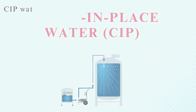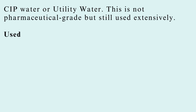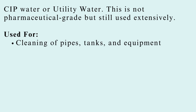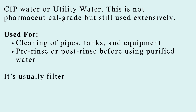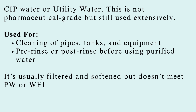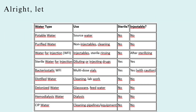Clean-in-place water, or CIP water — also called utility water — is not pharmaceutical grade but still used extensively. It's used for cleaning of pipes, tanks, and equipment, and for pre-rinse or post-rinse before using purified water. It's usually filtered and softened but doesn't meet PW or WFI purity standards.